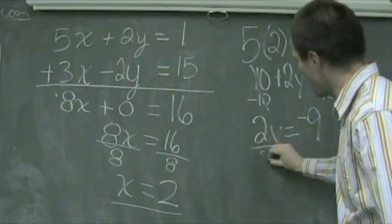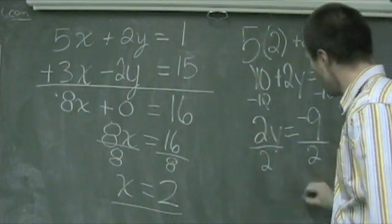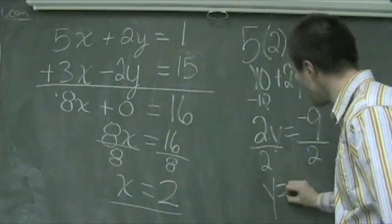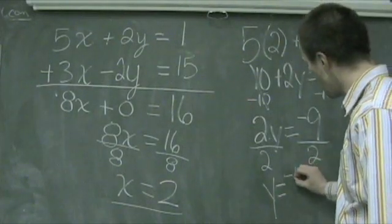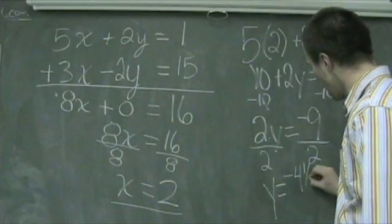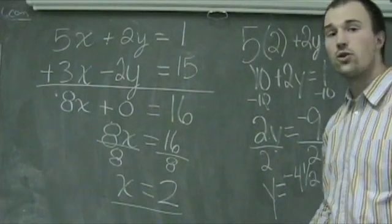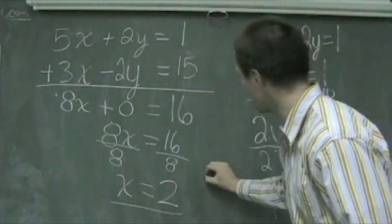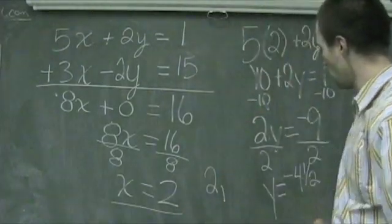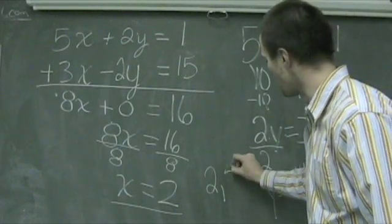Dividing both sides by 2 to get y by itself, we find ourselves with y being equal to a negative 9 halves, or a negative 4 and 1 half. The solution for this system of equations is our x coordinate 2, y coordinate negative 4 and 1 half.